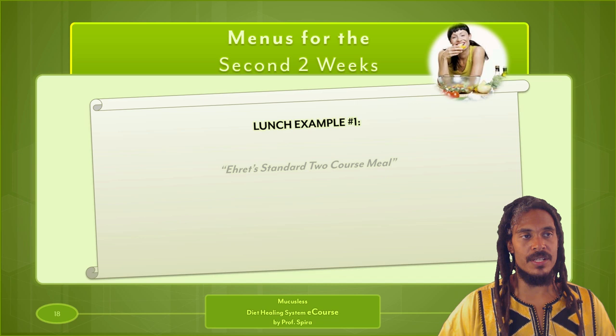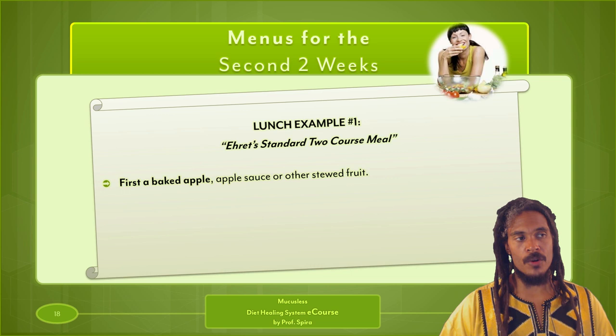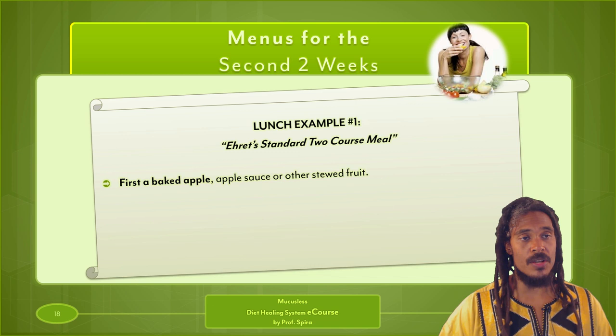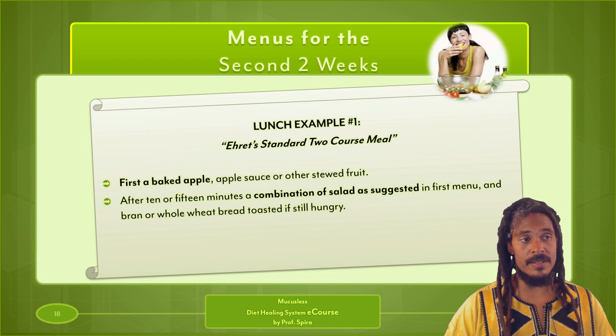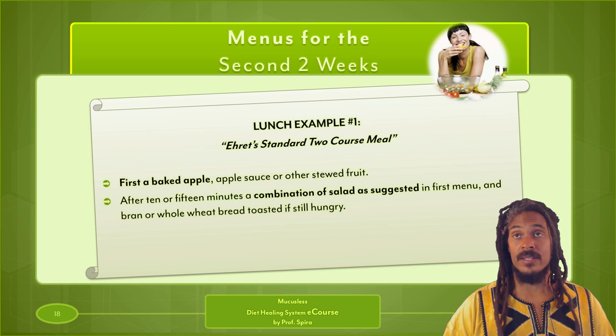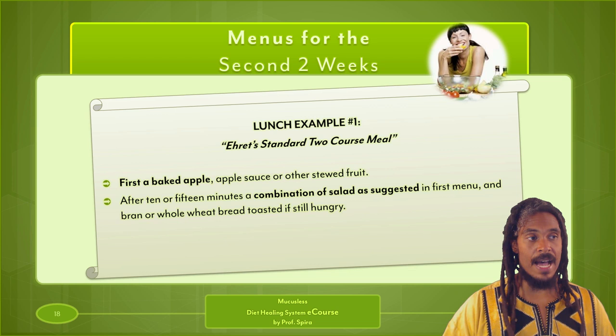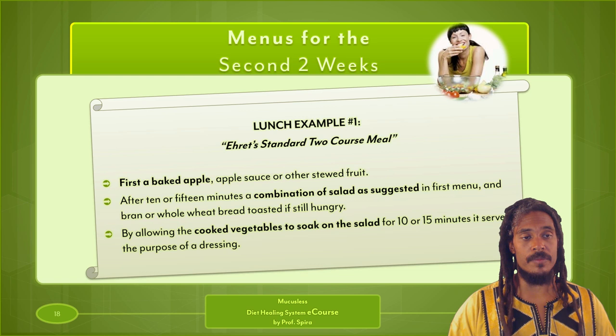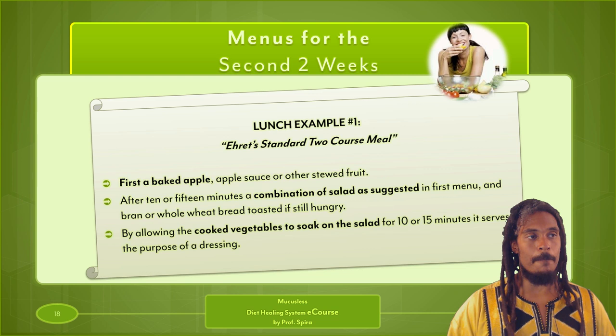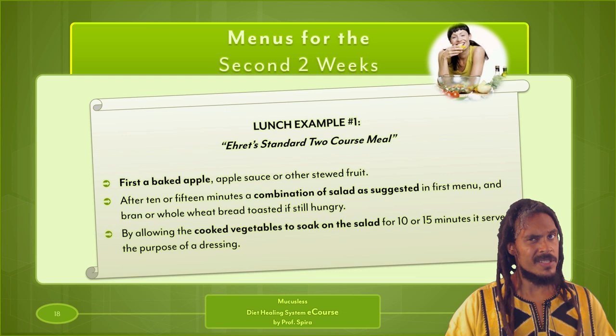For the second two weeks, the first lunch example is what I call Ehret's standard two-course meal. First, a baked fruit item — baked apple, applesauce, or other stewed fruit — then after 10 or 15 minutes, eat a combination salad as suggested in the first menu, as well as well-toasted bran or whole wheat bread if desired. Notice that he still hasn't introduced raw fruit yet — Ehret is going to gradually transition us into raw fruit if you follow this plan as it's set up.